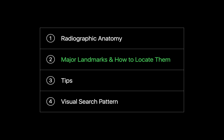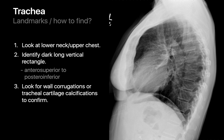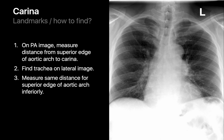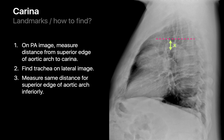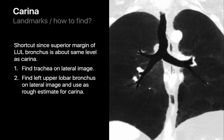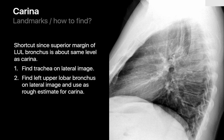The trachea can be found in the upper chest by looking for a dark long rectangle oriented slightly obliquely. Corrugations along the anterior wall or tracheal cartilage calcifications will help confirm it. The carina on a lateral chest radiograph is located by first finding it on the frontal image and measuring the distance between the carina and the superior margin of the aortic arch, then applying that same distance on the lateral image. A quick shortcut is that the superior margin of the left upper lobe bronchus black circle is usually at approximately the same level as the carina.